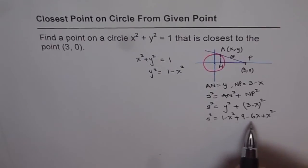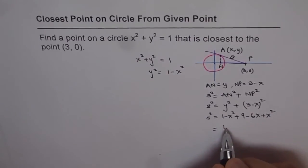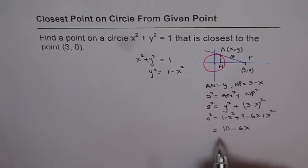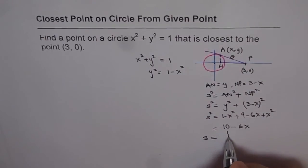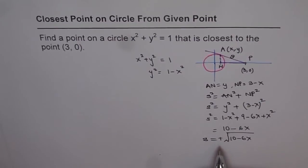So I have now my distance in one variable, that is x. Let's simplify this. X square gets cancelled off. We get minus 6x and 1 plus 9 is 10. So we get 10 minus 6x here. So we have a relation which is now the distance is actually square root of 10 minus 6x. Now we have to take positive value since distance cannot be negative. So by doing all this, we found a relation between the distance of a point on the circle with 3,0.